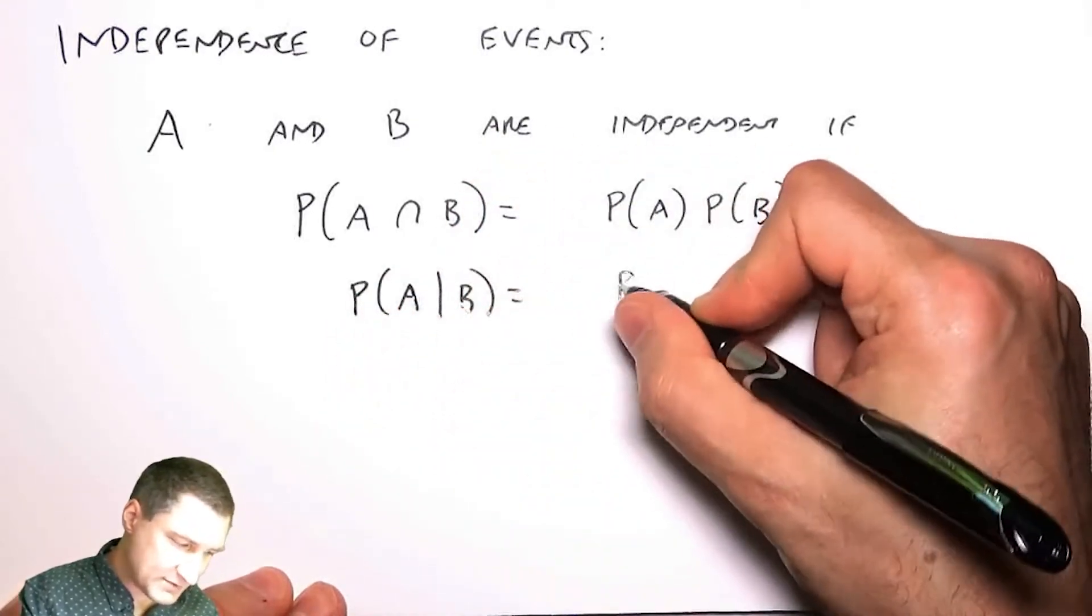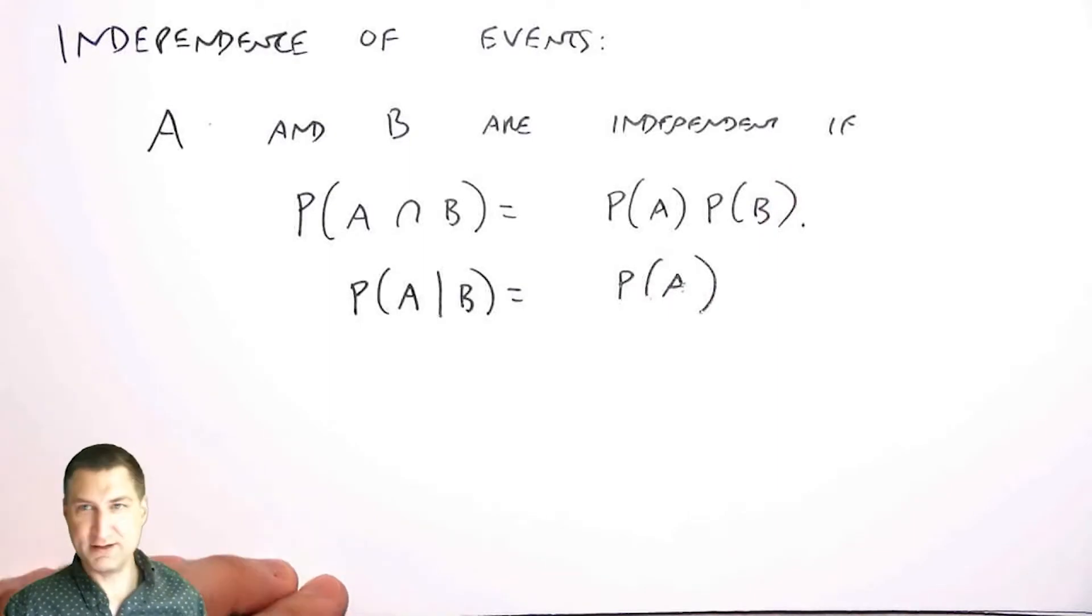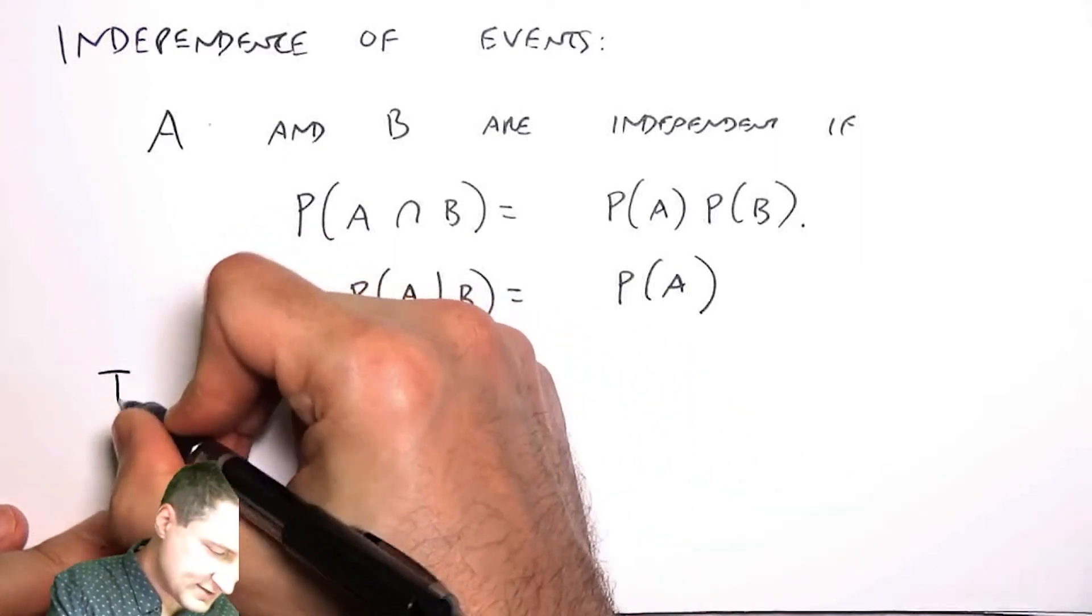That knowing that B happened doesn't tell me anything new about whether A happened or not. Now I talk about two random variables being independent. So I can say that two random variables